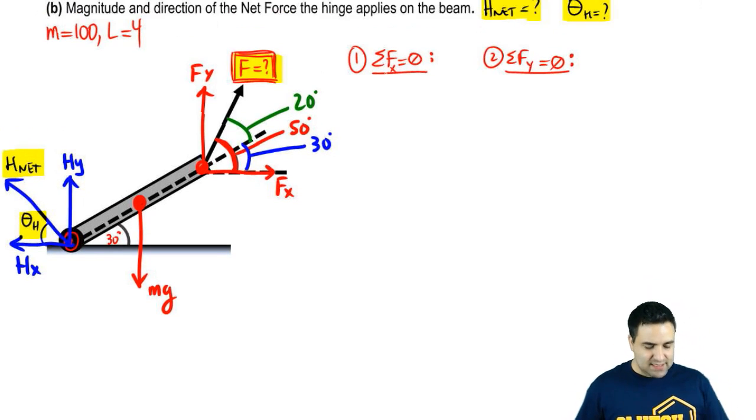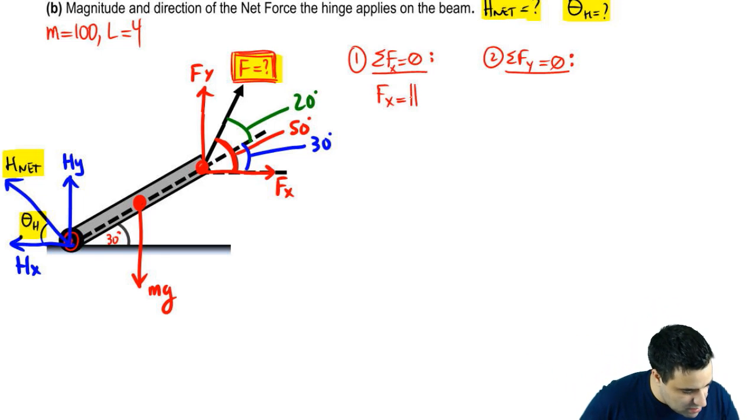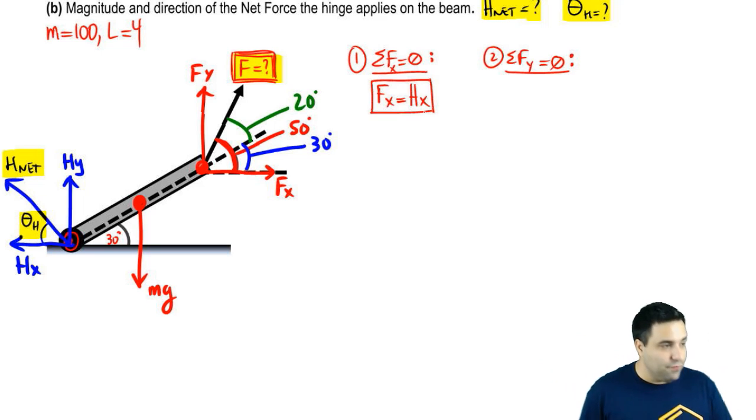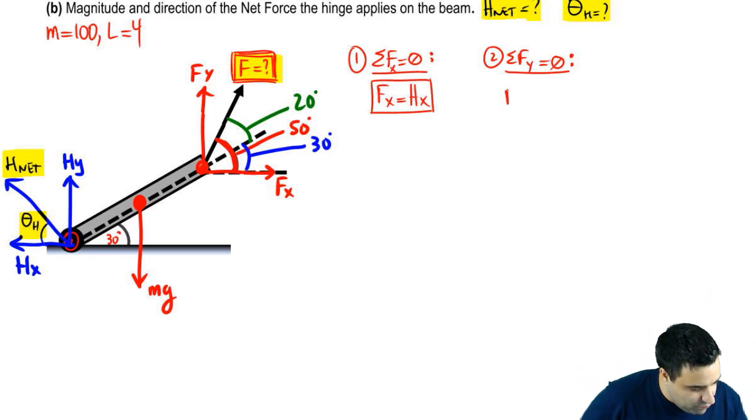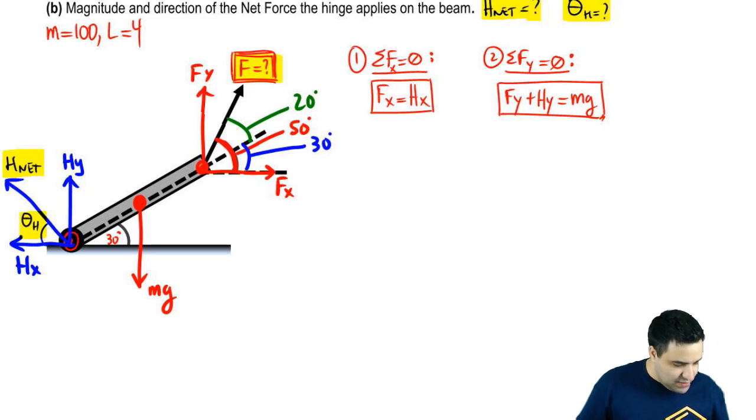So the forces in the X axis are HX and FX. So I can write that FX and HX are equal to each other because they cancel each other. The forces in the Y axis are FY, HY and then MG. So I can write that FY plus HY equals MG. Now notice that I don't know FX. I don't know HX. I don't know FY. I don't know HY. I know MG. So there's a ton of stuff we don't know here. So this is not going to be enough. I'm going to have to write a third equation, which is going to be a torque equation. Sum of all torques equals zero about some reference axis.